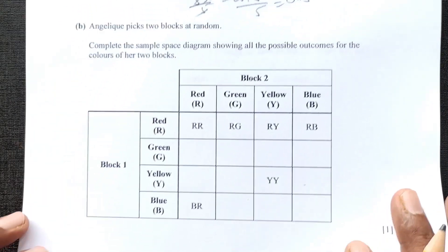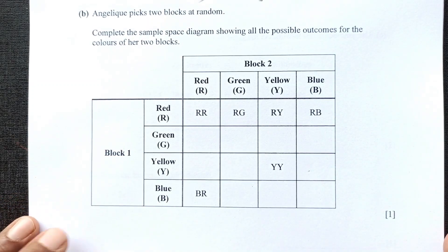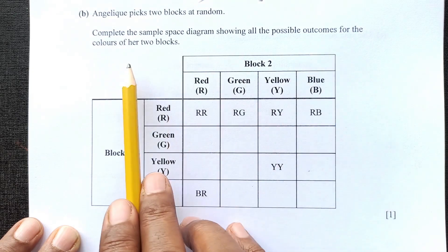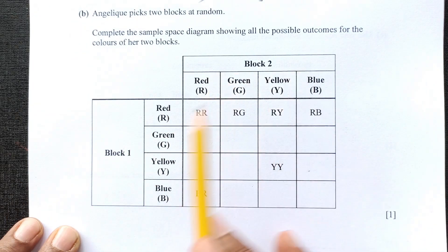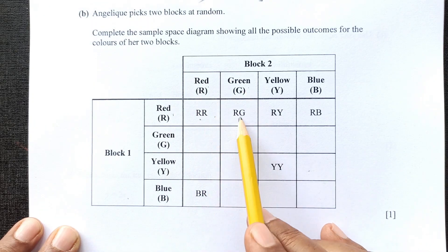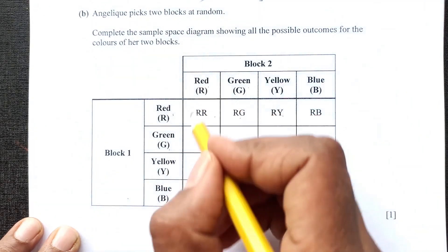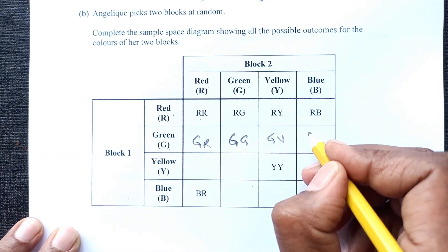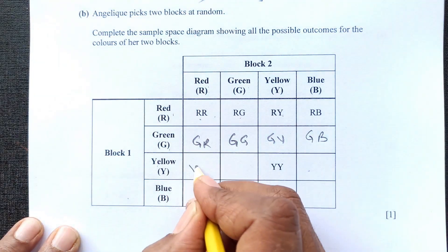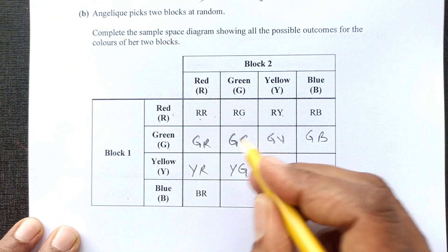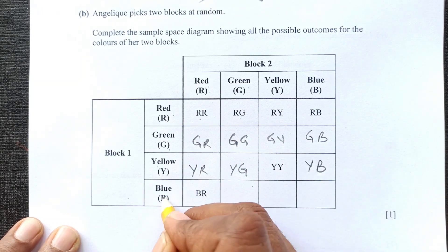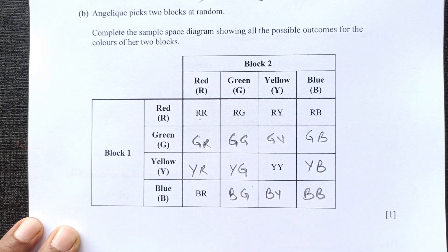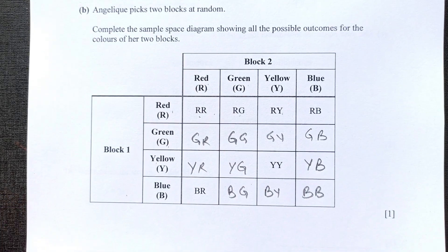Part B. Angelic picks two blocks at random. Complete the sample space diagram to show all the possible outcomes for the colors. We have here block 2, block 1. Red, red, red, red, green, red, yellow. Now we will go this way: GR, then GG, GY and GB. Now this way YR, YG, YY and YB. Now BR, BG, BY and BB. That is number 12. I hope you guys understood everything.